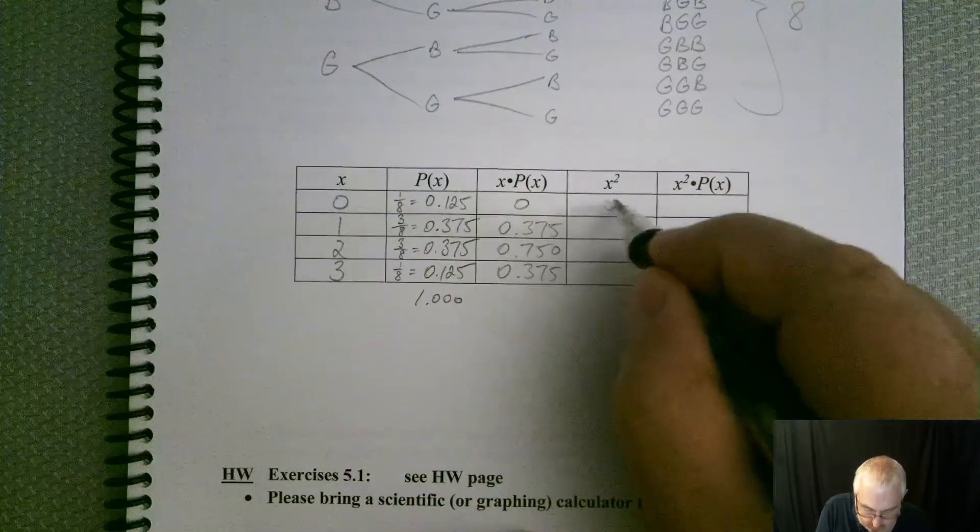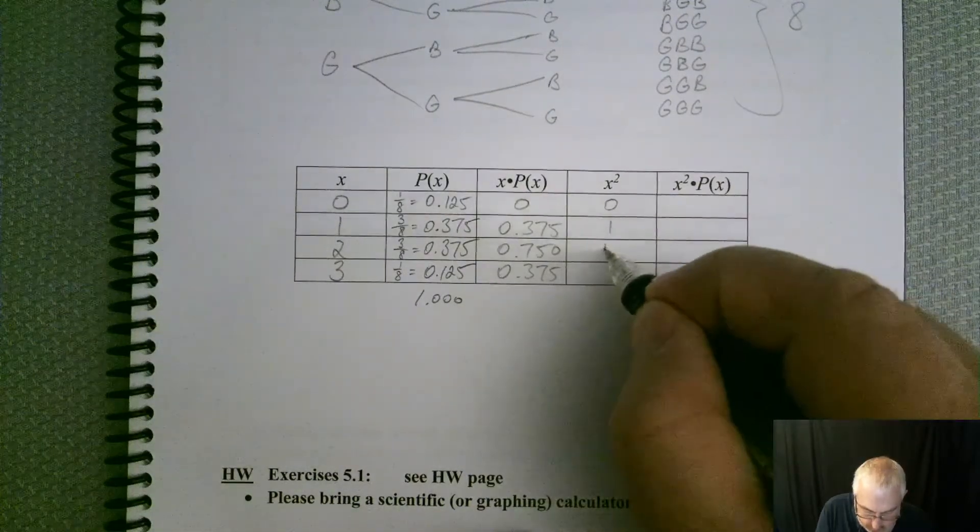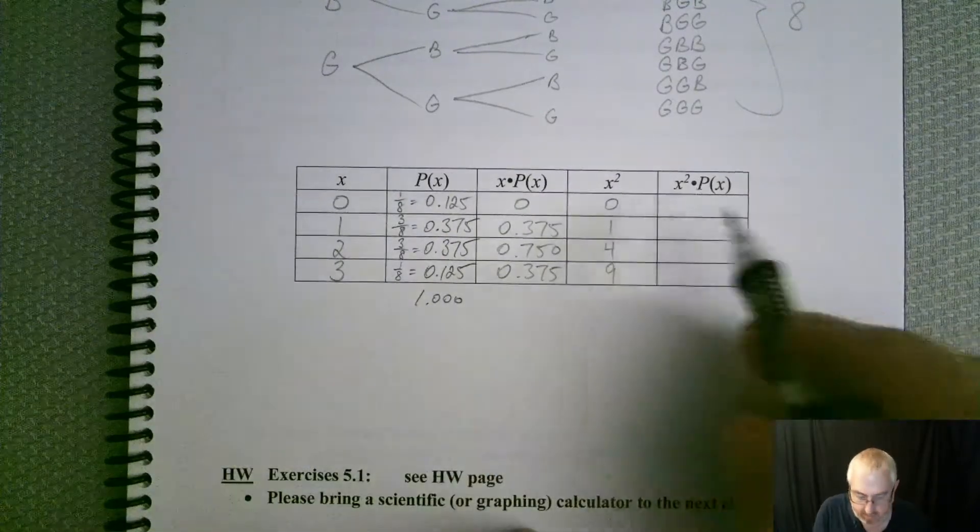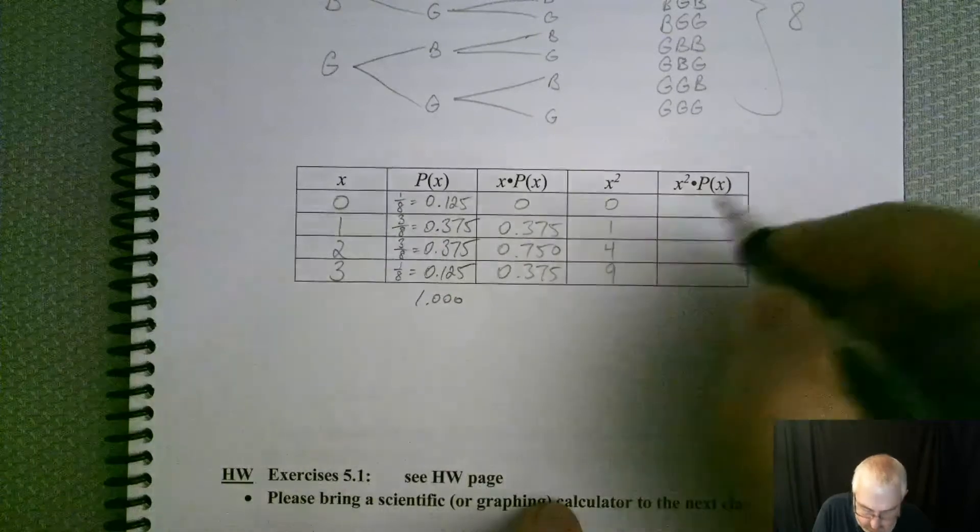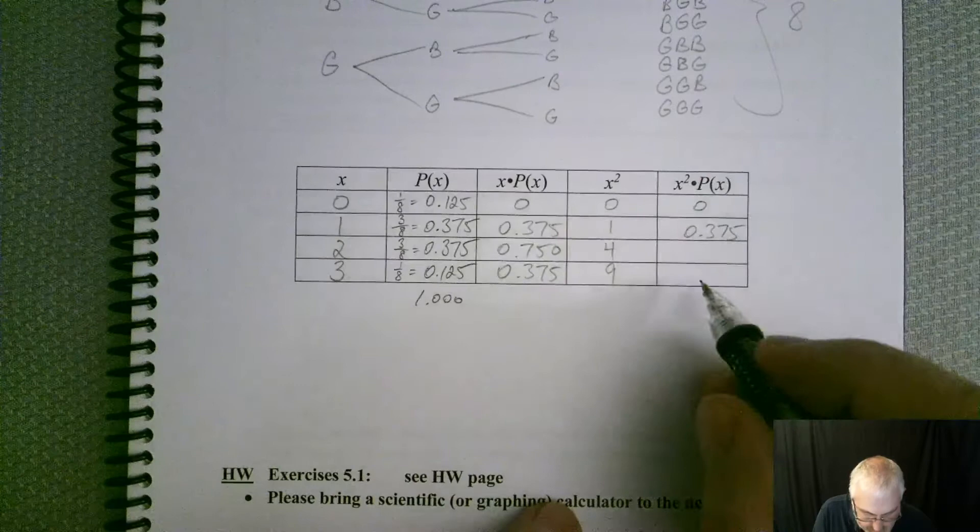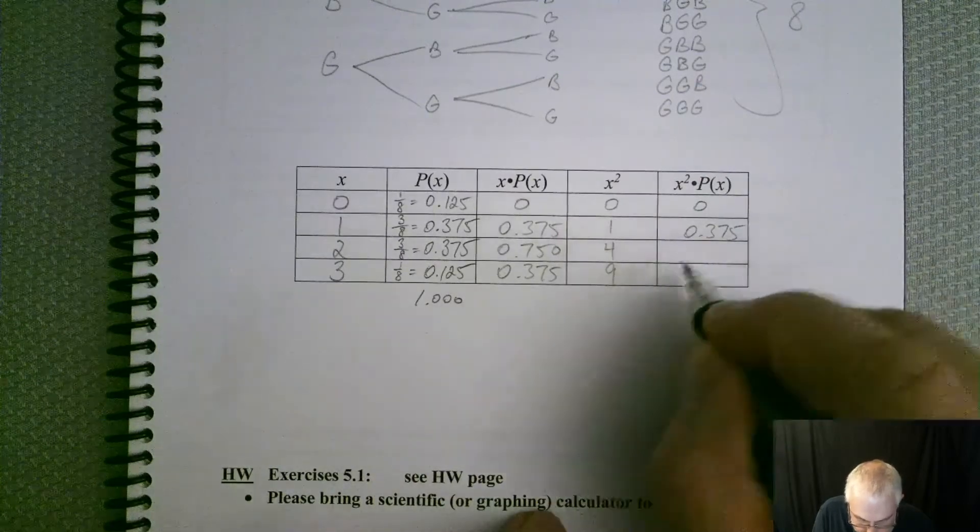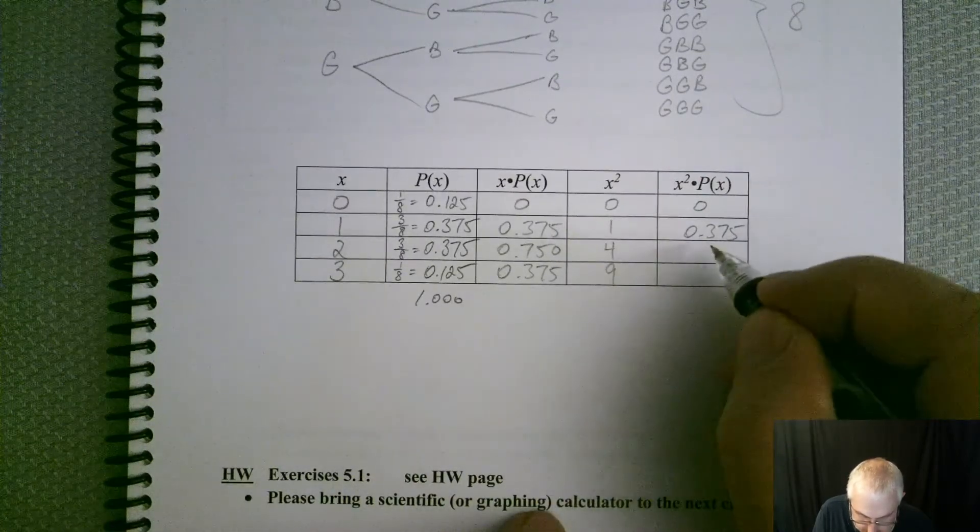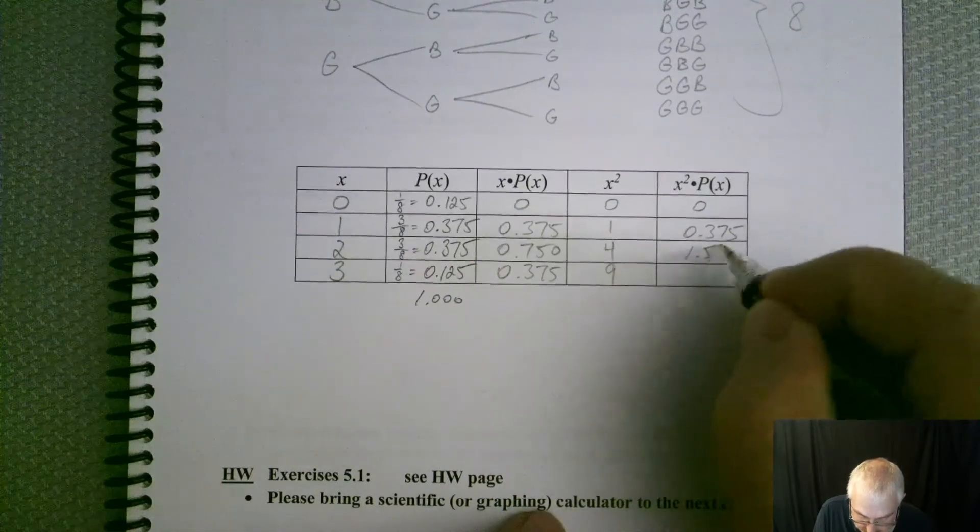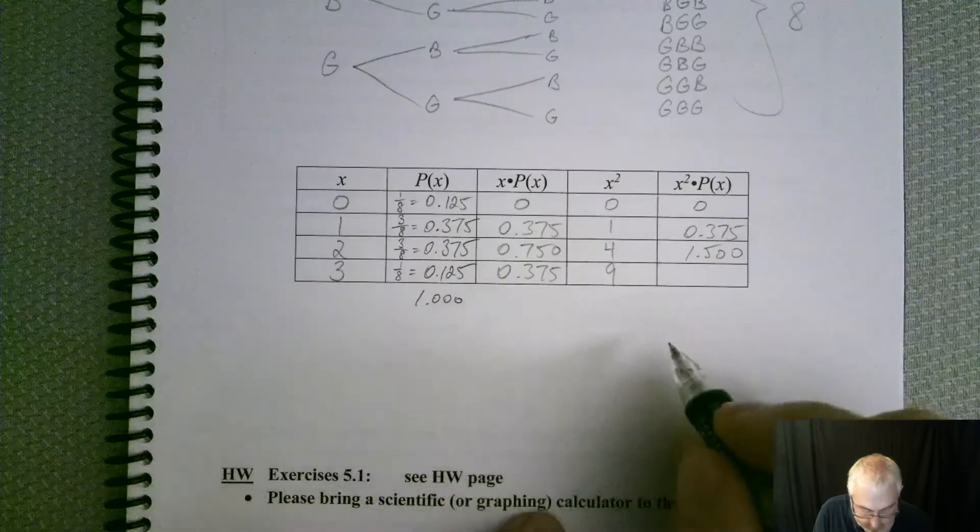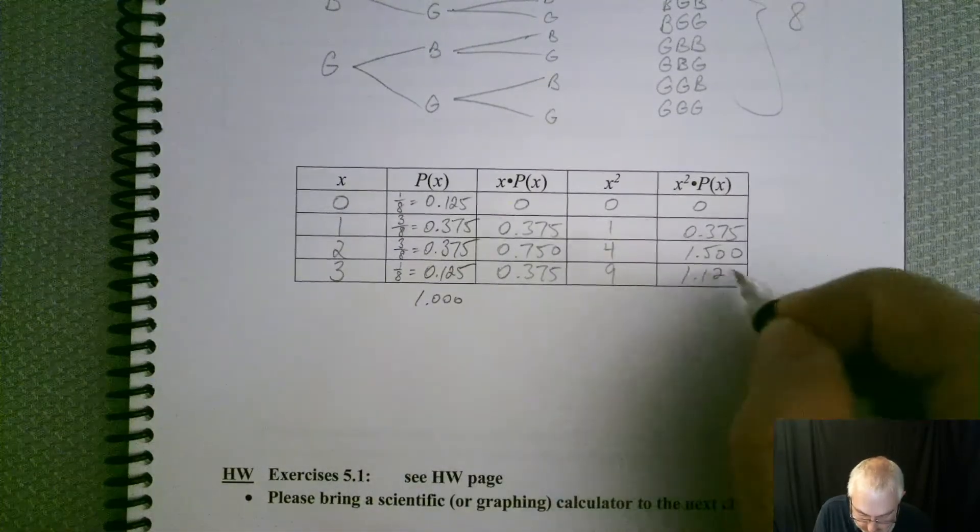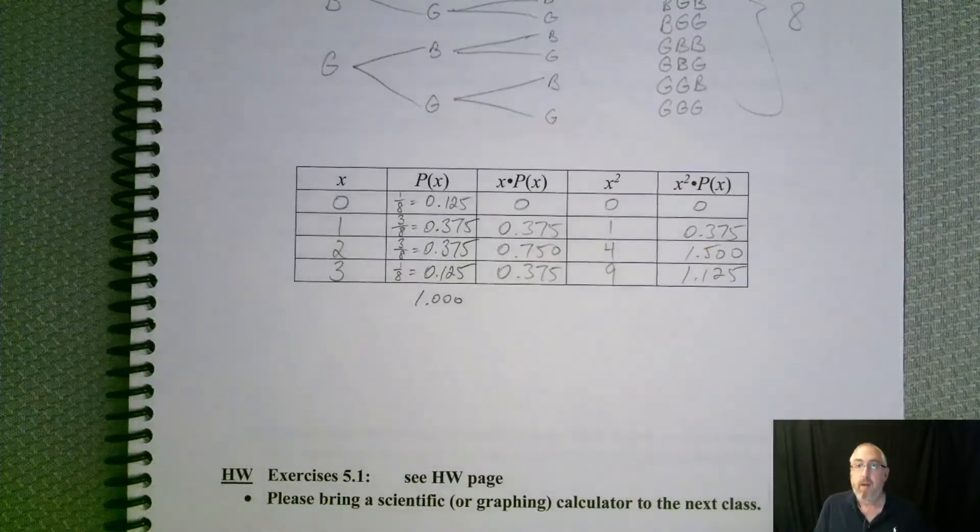All right. Now our x's. So 0, 1, 4, and 9 based off of our x's. And now we've got to multiply. So we've got a 0, 0.375. Looks like 1.500. And we've got 9 times that, so 1.125.